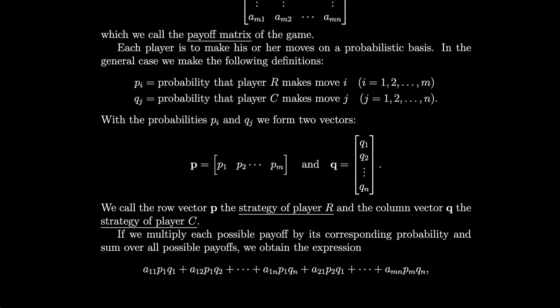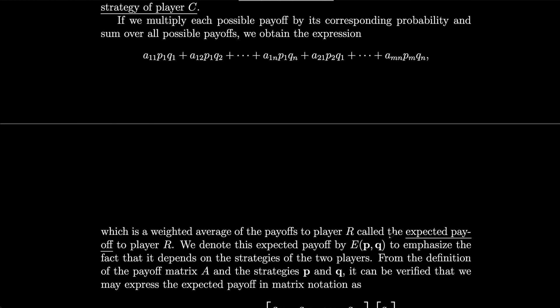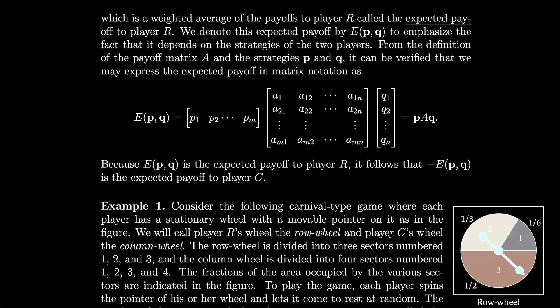If we multiply each possible payoff by its corresponding probability and sum over all possible payoffs, we obtain the expression a11·p1·q1 + a12·p1·q2 + ... + amn·pm·qn. This is a weighted average of the payoffs to player R, called the expected payoff to player R.